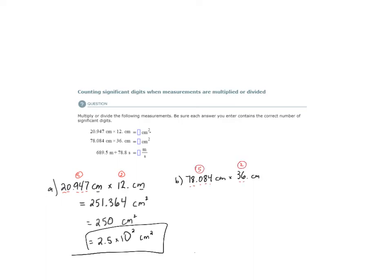So again, our final answer is limited to two significant digits. When I do the calculation, I get 2,811.024 centimeters squared. Rounded to two significant digits, this could be 2,800.